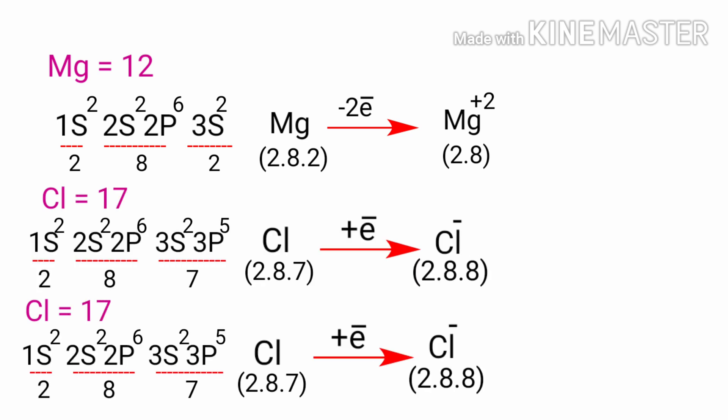Chlorine in its ground state has 7 electrons in its outer shell. Again, it is more energy efficient for chlorine to gain one electron than to lose seven.